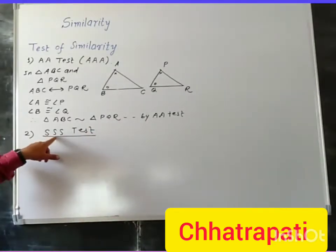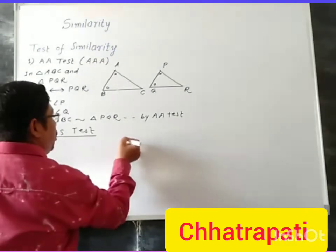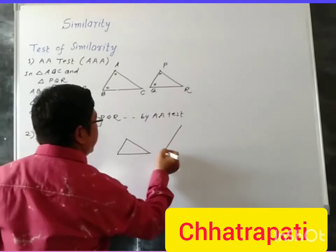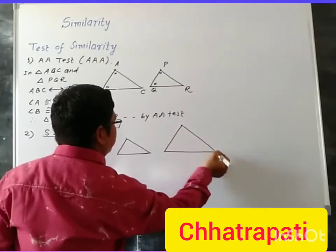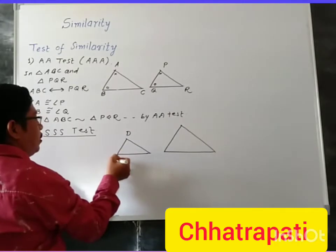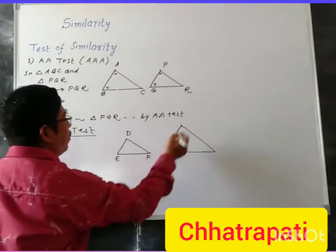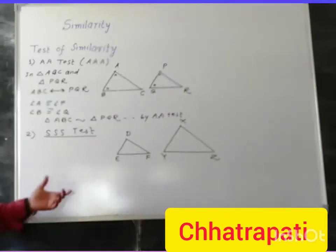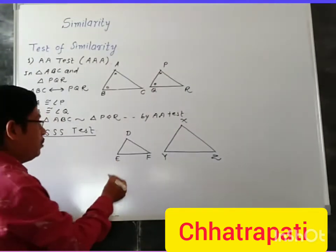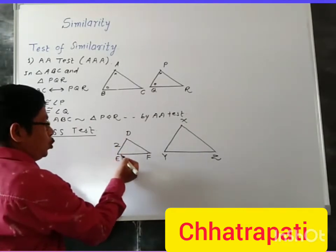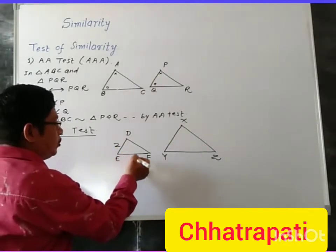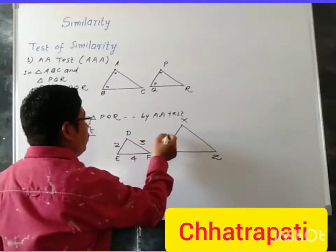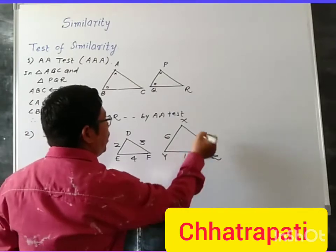The SSS test means the side-side-side test. We are given two triangles here. Suppose one triangle is DEF and the other triangle is XYZ. The measurements of the sides are given: for triangle DEF, this side is 2, this side is 4, and this side is 3. For triangle XYZ, the corresponding sides are 6, 12, and 9.